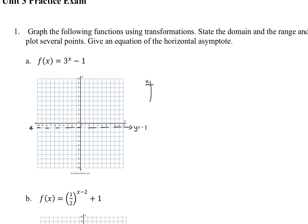Now I'll plot several points. The y-intercept is when x equals 0: 3 to the 0 power is 1, and 1 subtract 1 is 0, so the y-intercept is (0, 0). When x equals 1, 3 to the first power is 3, and 3 subtract 1 is 2, giving point (1, 2). When x equals 2, 3 squared is 9, and 9 subtract 1 is 8, giving point (2, 8).